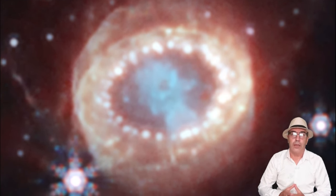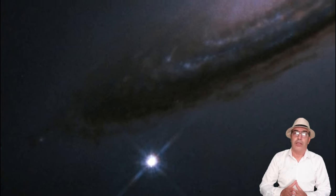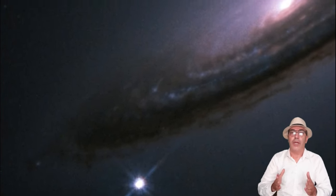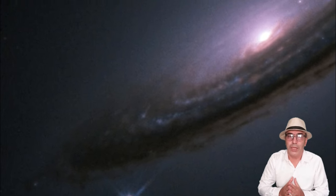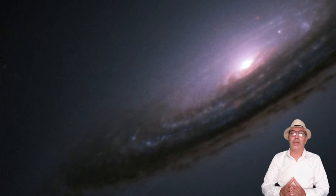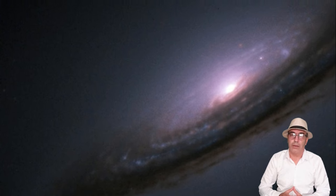New observations by Webb's NIRCam near-infrared camera provide a crucial clue to our understanding of how a supernova develops over time to shape its remnant. Webb's NIRCam captured this detailed image of SN 1987a.